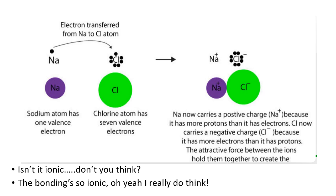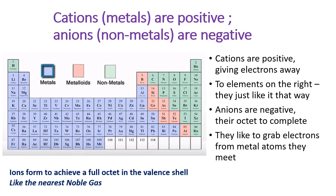Isn't it ionic? Don't you think? The bonding's so ionic. Oh yeah, I really do think. Cations are positive, giving electrons away to elements on the right. They just like it that way.